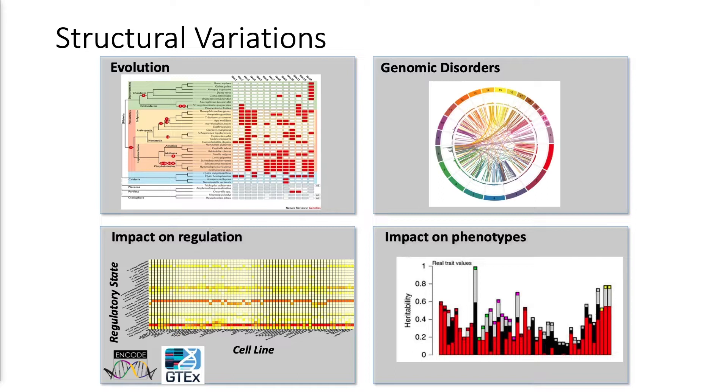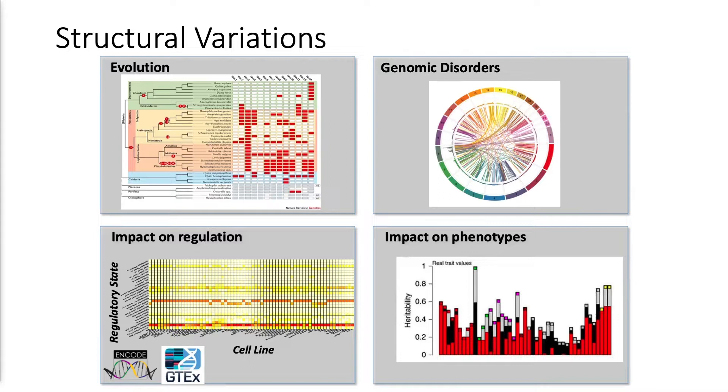I was also fortunate to team up with ENCODE and GTAC and identify the impact of structural variants on regulation itself. The last point I want to make is that they're also contributing to several phenotypes. In red you can see the contributions of copy number changes, in black rearrangements, and in green SNPs. It's only when you take together all these different genomic variations that we can really improve our understanding of certain phenotypes.